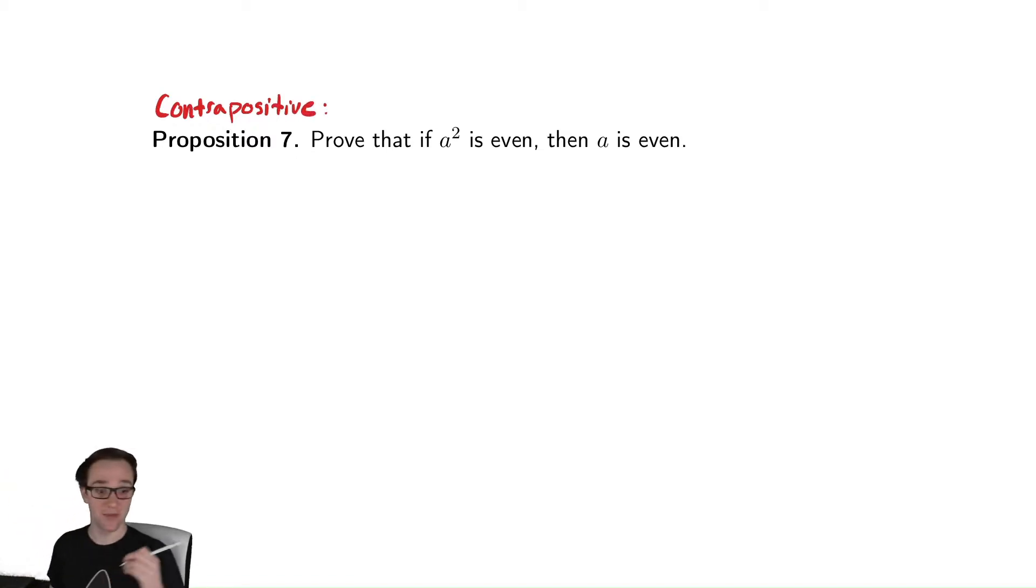Remember that the contrapositive of an implication is you switch the hypothesis and the conclusion and negate both of them. So I would have that if A is odd, then A squared is odd.